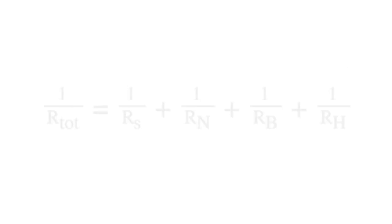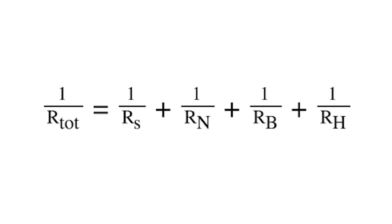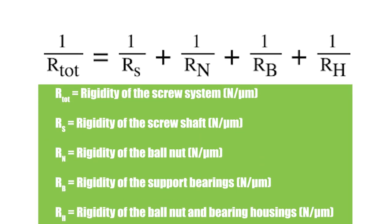Shown here is the equation for the total rigidity of a ball screw assembly. Notice that the total rigidity depends not only on the screw shaft and the ball nut, but also on the support bearings and the ball nut and end bearing housings.